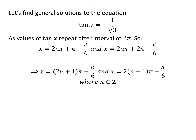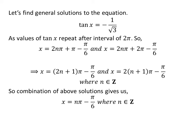After simplification, the general solutions become (2n+1)π minus π/6. Since 2n+1 is an odd integer and covers all odd integers, and the union of the two solution sets covers all integers, the general solution to the equation is nπ minus π/6, where n is any integer.